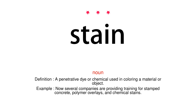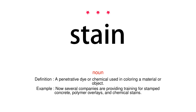Noun. Definition: A penetrative dye or chemical used in coloring a material or object. Example: Now several companies are providing training for stamped concrete, polymer overlays, and chemical stains.